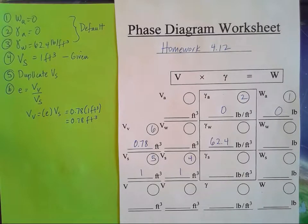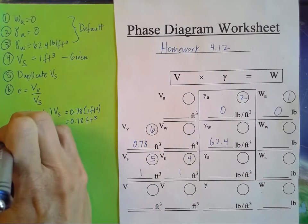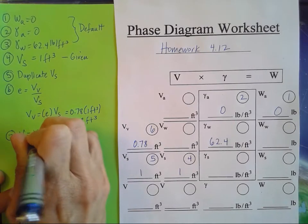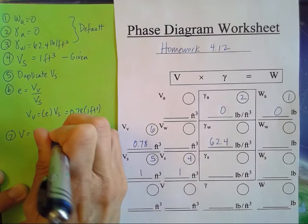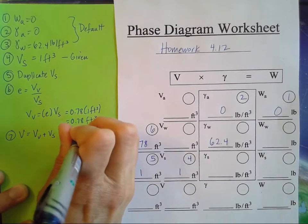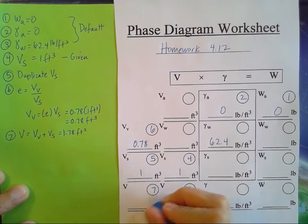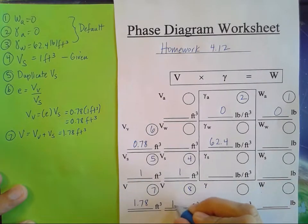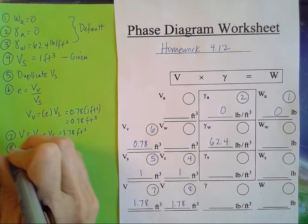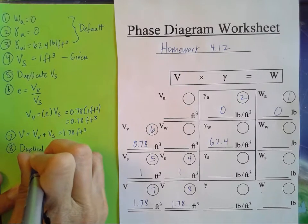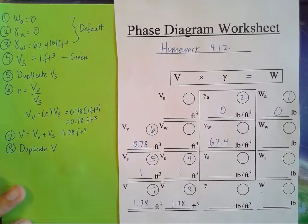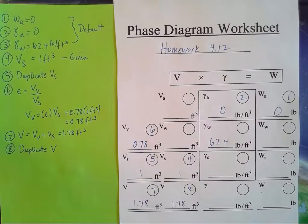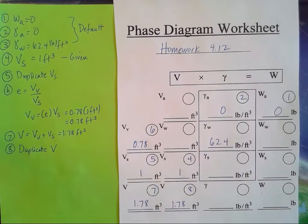Now let's solve the total volume by adding volume of voids and volume of solids: 0.78 plus 1.00 gives 1.78 cubic feet. That's number seven, and we can duplicate it for number eight. Next, I'll use specific gravity, because whenever I have specific gravity I can find gamma solids since gamma water is always given.